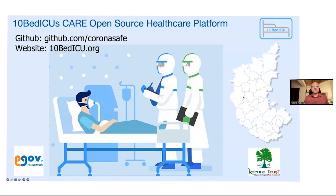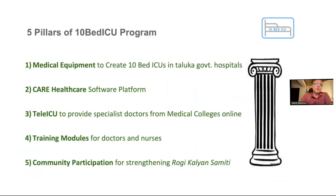This started during the COVID wave two, where a lot of deaths happened unfortunately. And we decided that we'll create ICUs in government hospitals, especially smaller government hospitals and secondary centers, which cater to small towns and villages. We very quickly knew that we need a technology platform in order to scale this rapidly as COVID was affecting a lot of people. This was about creating critical care infrastructure.